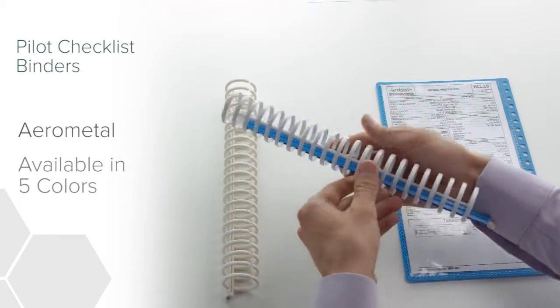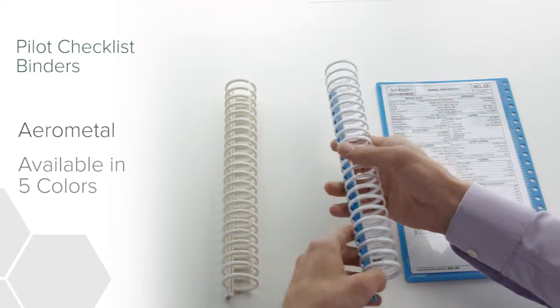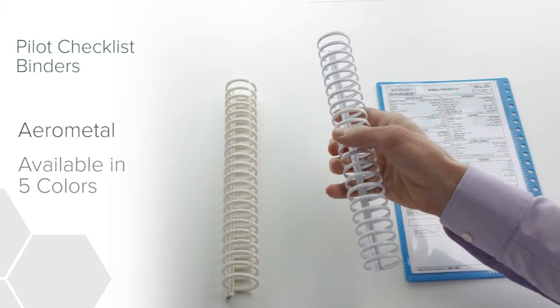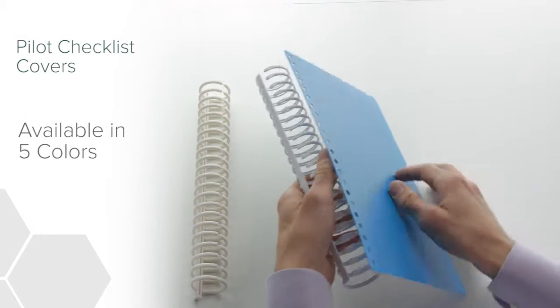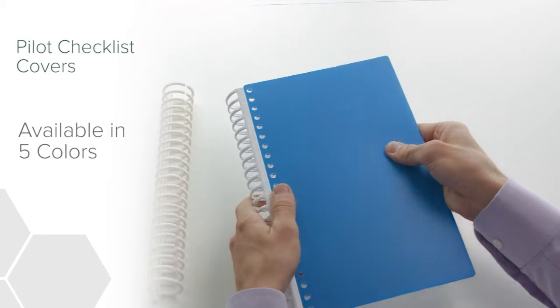Our new Aerometal binder features a unique European design, manufactured by the same company that supplies Airbus, and is compatible with Aerobind's other 22 ring products, like our 22 ring pilot checklist covers.